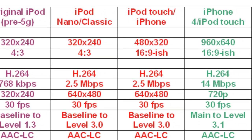Moving over one class — covering both the iPod Nano Classic and the iPod Touch iPhone — we see the video codec for both is H.264, with a maximum data rate of 2.5 megabits per second. Frame rate is 30 frames per second, and both of those devices can play video encoded at 640 by 480.